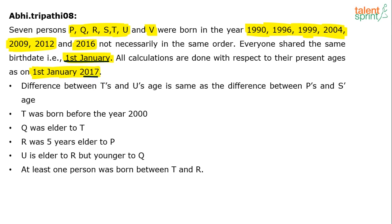Now there are five or six clues given to us. Clue 1: The difference between T's and U's age is the same as the difference between P's and S's age. Clue 2: T was born before the year 2000. Clue 3: Q was elder to T. Clue 4: R was five years elder to P. Clue 5: U is elder to R but younger to Q. Clue 6: At least one person was born between T and R.